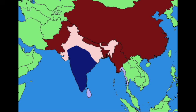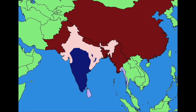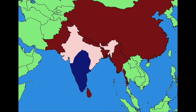India retakes Sri Lanka and southern Myanmar, and launches a counter-offensive in the north trying to slow the fall of India. But India is going to fall, with offensives starting on both coasts.